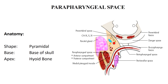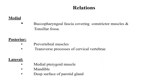Looking at the relations of the space: medially there is the buccopharyngeal fascia covering the constrictor muscles; posteriorly there is the prevertebral fascia covering the prevertebral muscles and the transverse processes of cervical vertebrae; while laterally there is the medial pterygoid muscle, mandible, and deep surface of the parotid gland.